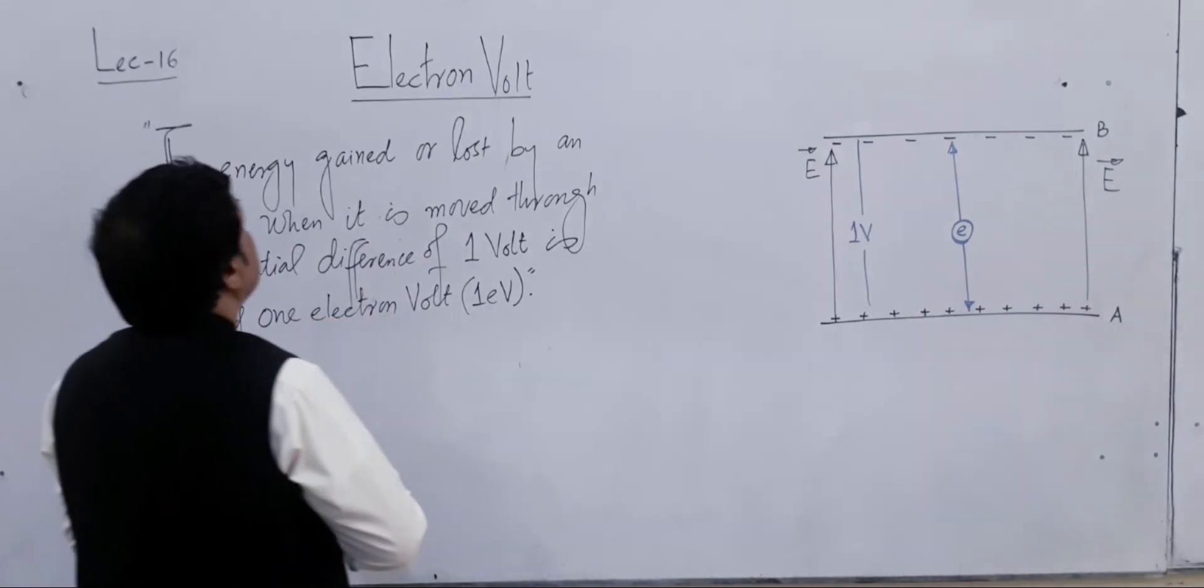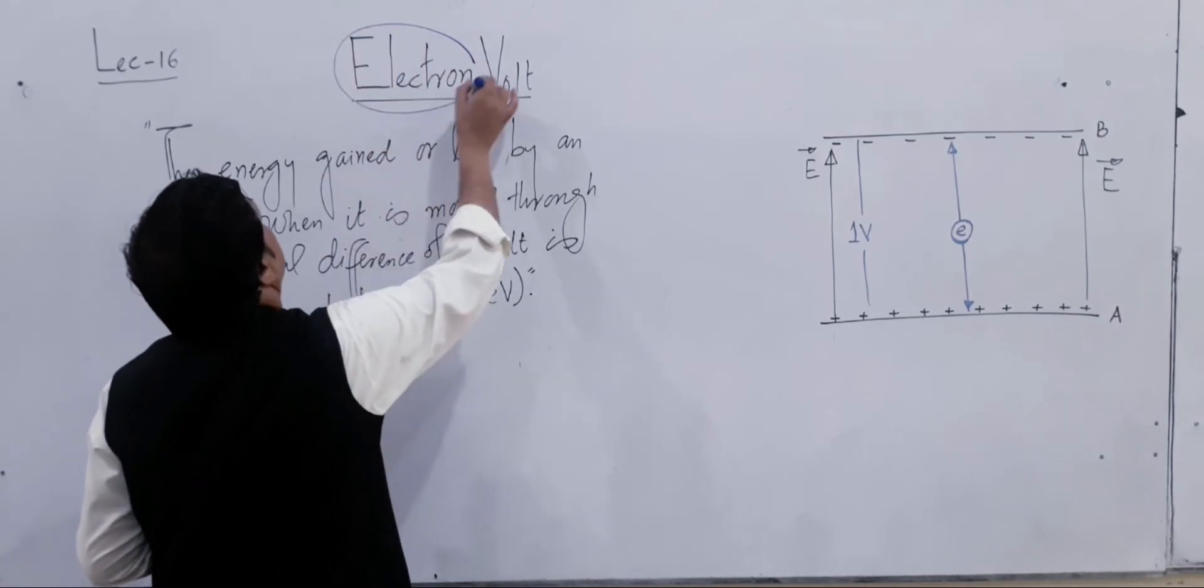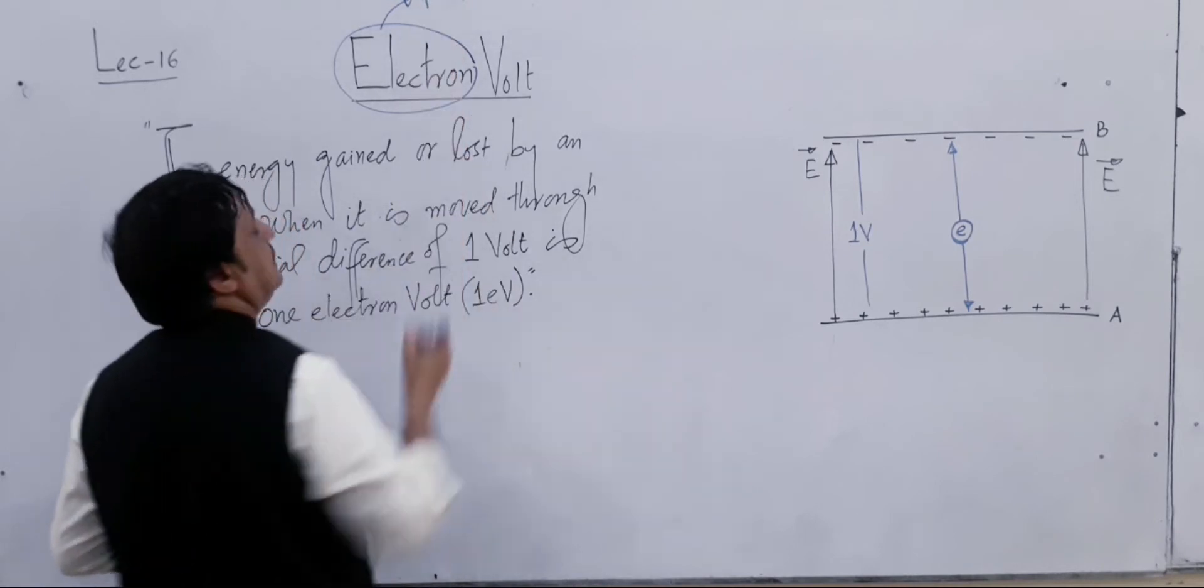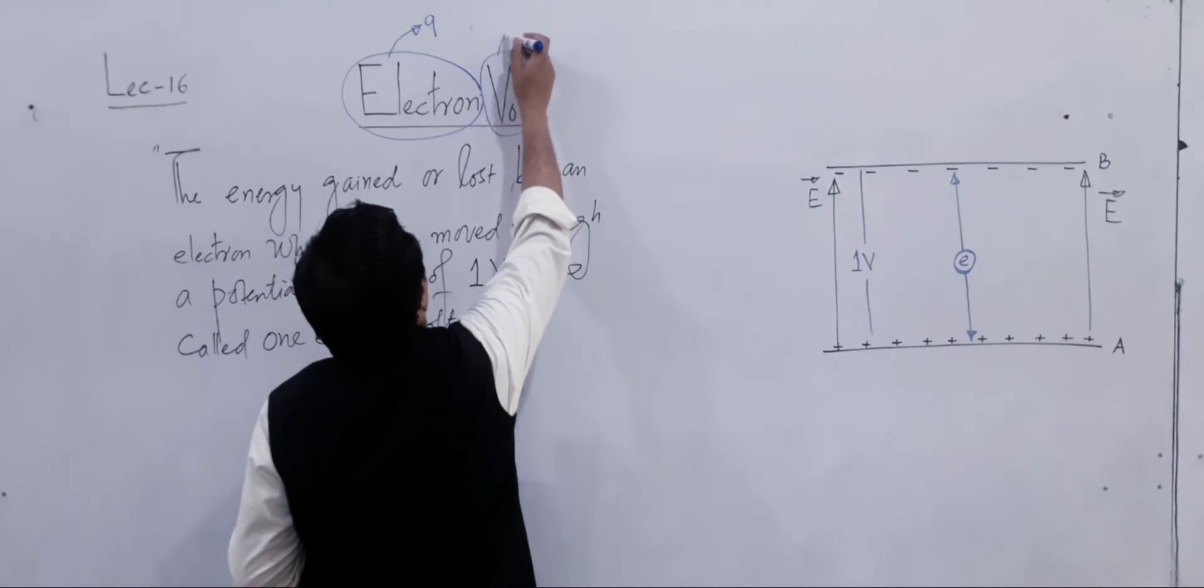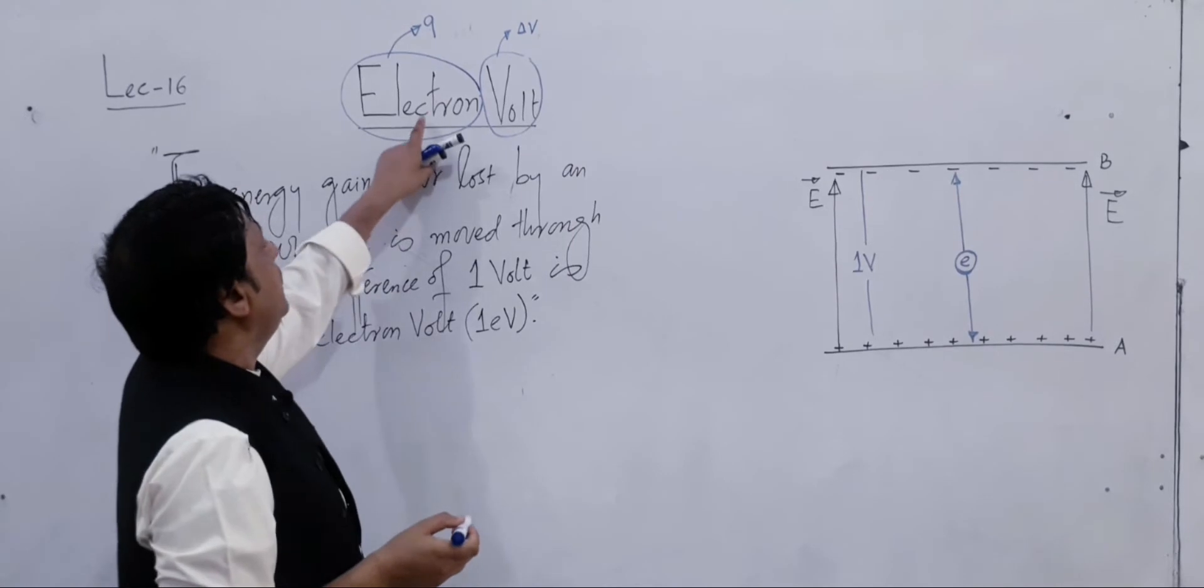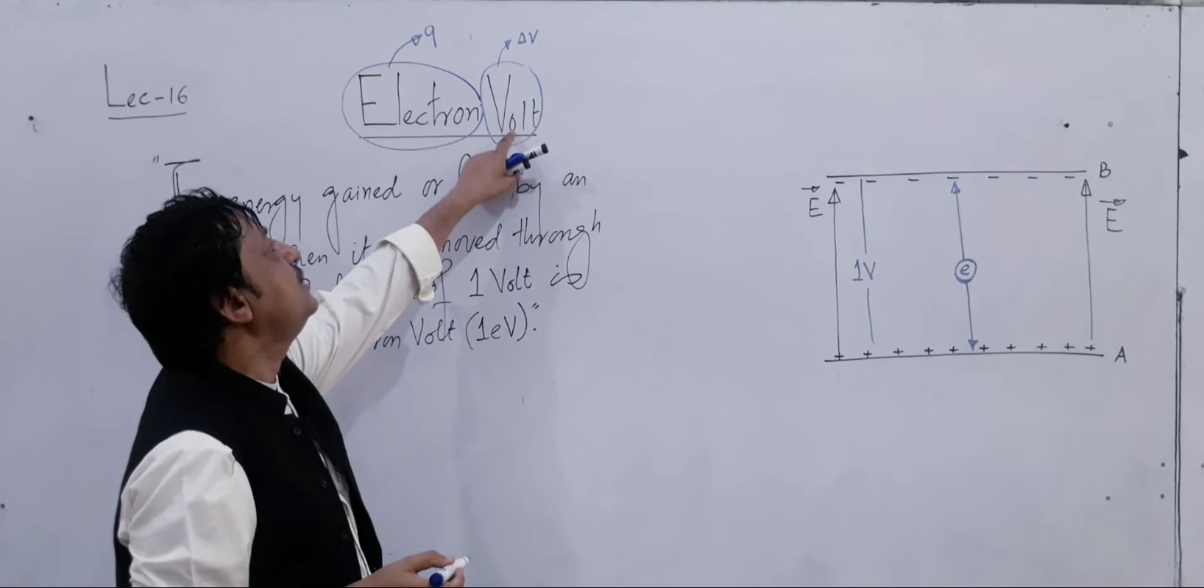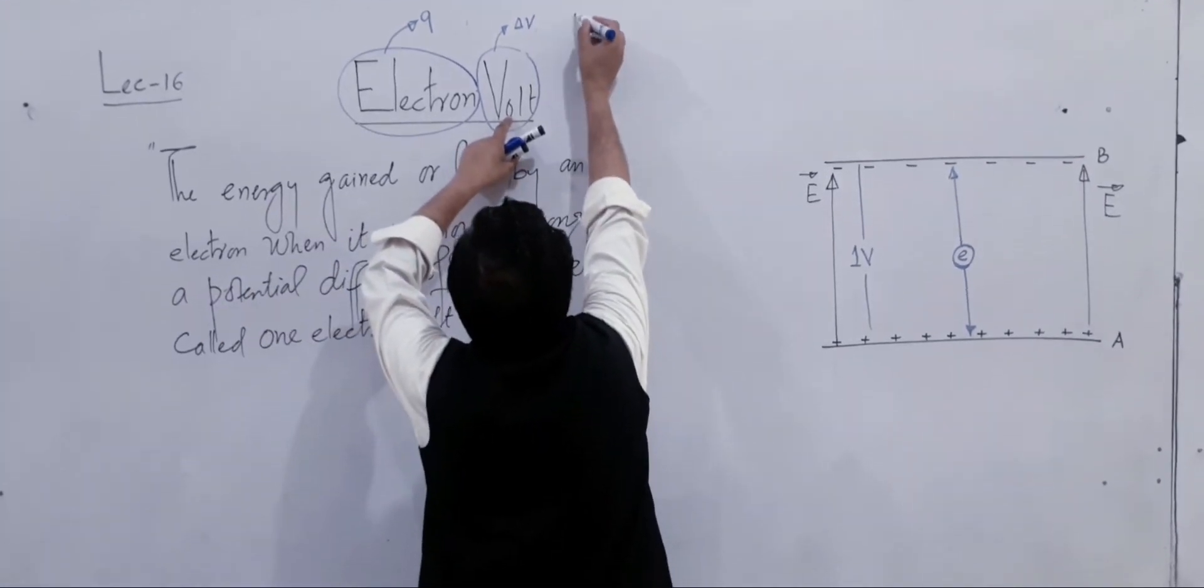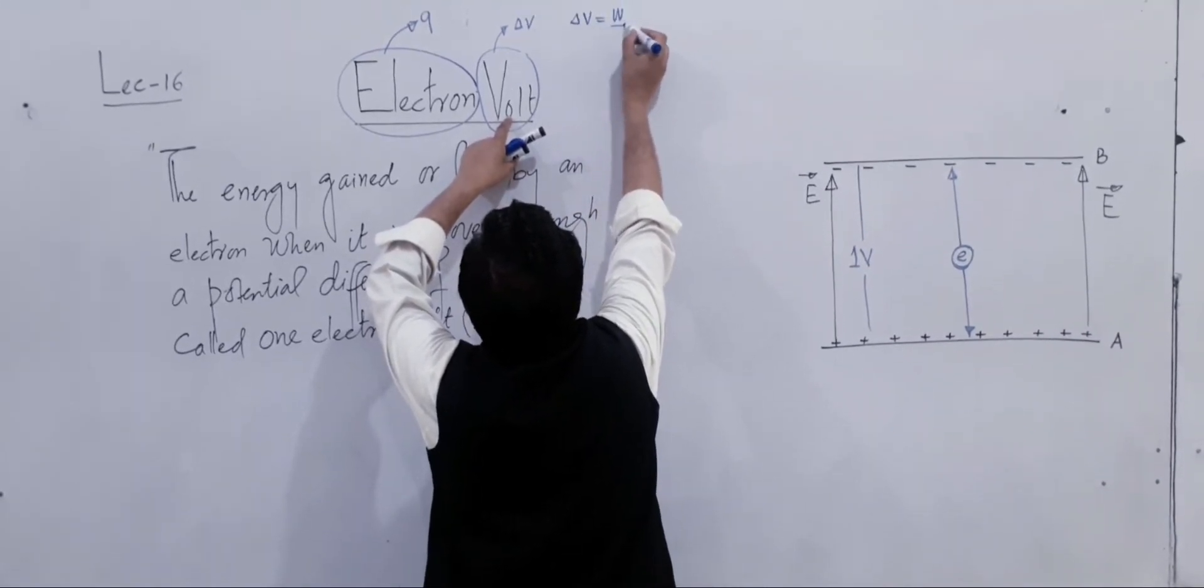What is electron? Electron is a charged particle. What is volt? Volt is the unit of potential difference. Electron is a negatively charged particle, and volt is the unit of potential difference. Last time we learned what is potential difference by definition: work done per unit charge.